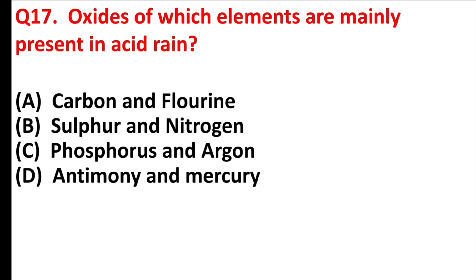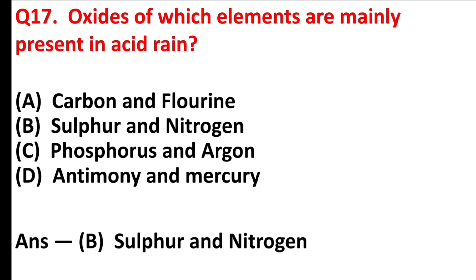Oxides of which elements are mainly present in acid rain? Answer is option B, sulfur and nitrogen.